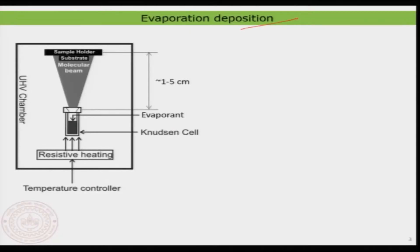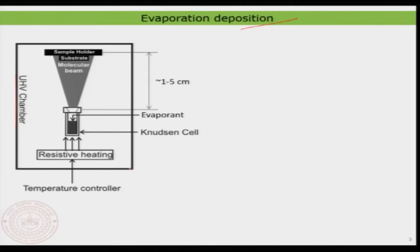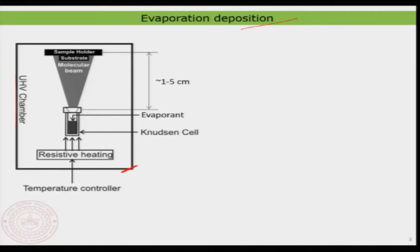The first and most important physical vapor deposition method is the simplest one: evaporation deposition. The name itself suggests that you are basically evaporating something, and then that molecular beam or atomic beam gets deposited onto the surface. You need an ultra high vacuum chamber or high vacuum chamber. The material you want to evaporate is kept inside a cell generally known as a Knudsen cell, named after a scientist.